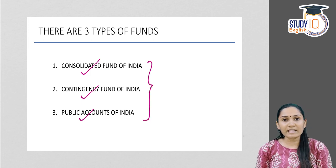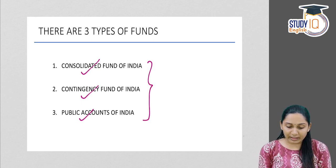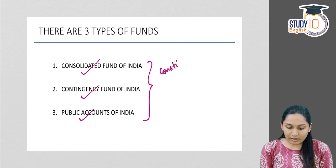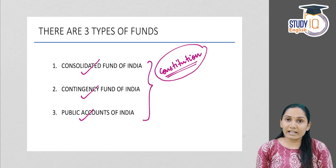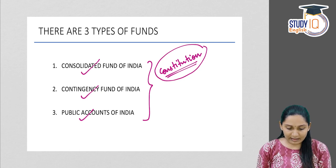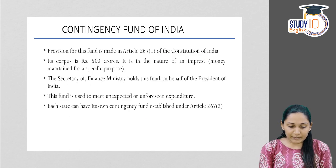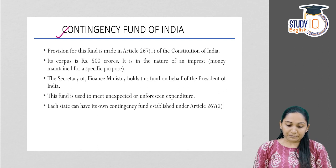All 3 of these funds are mentioned in the Constitution of the country. We will see these 3 in detail, starting first with the Contingency Fund of India.